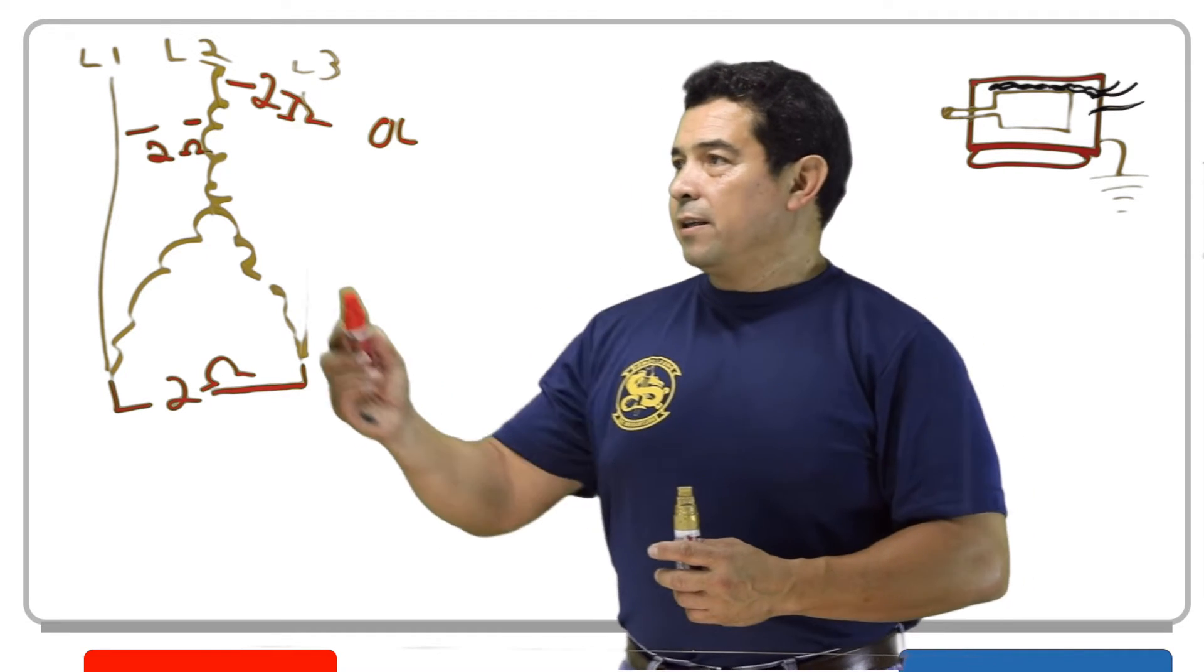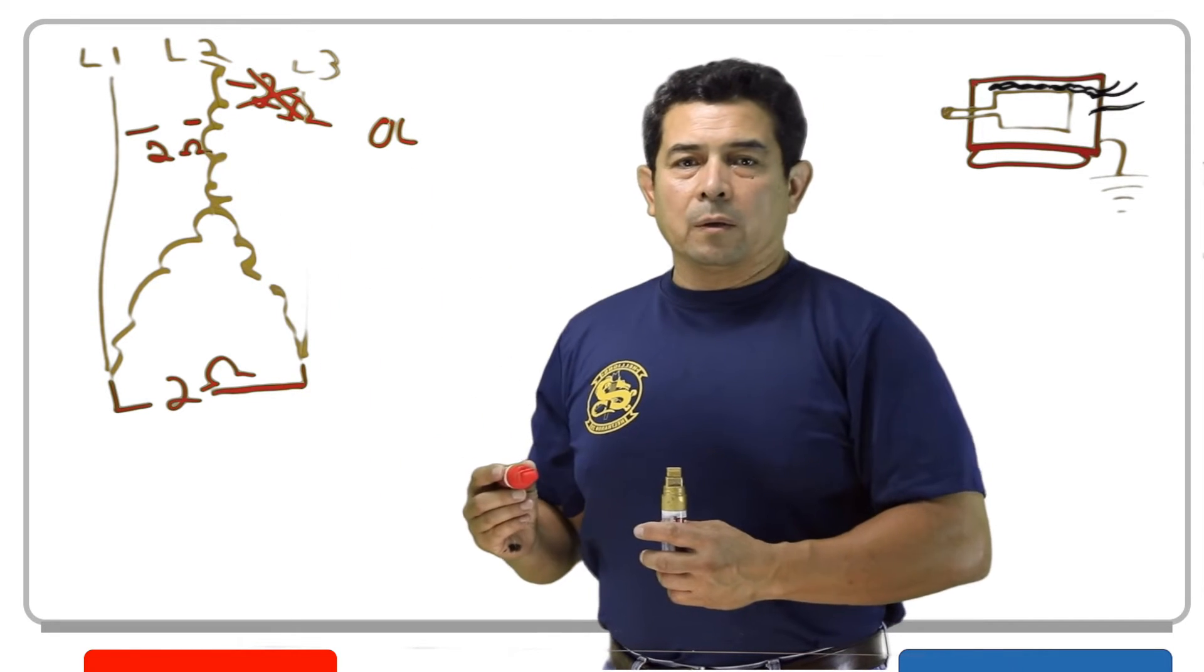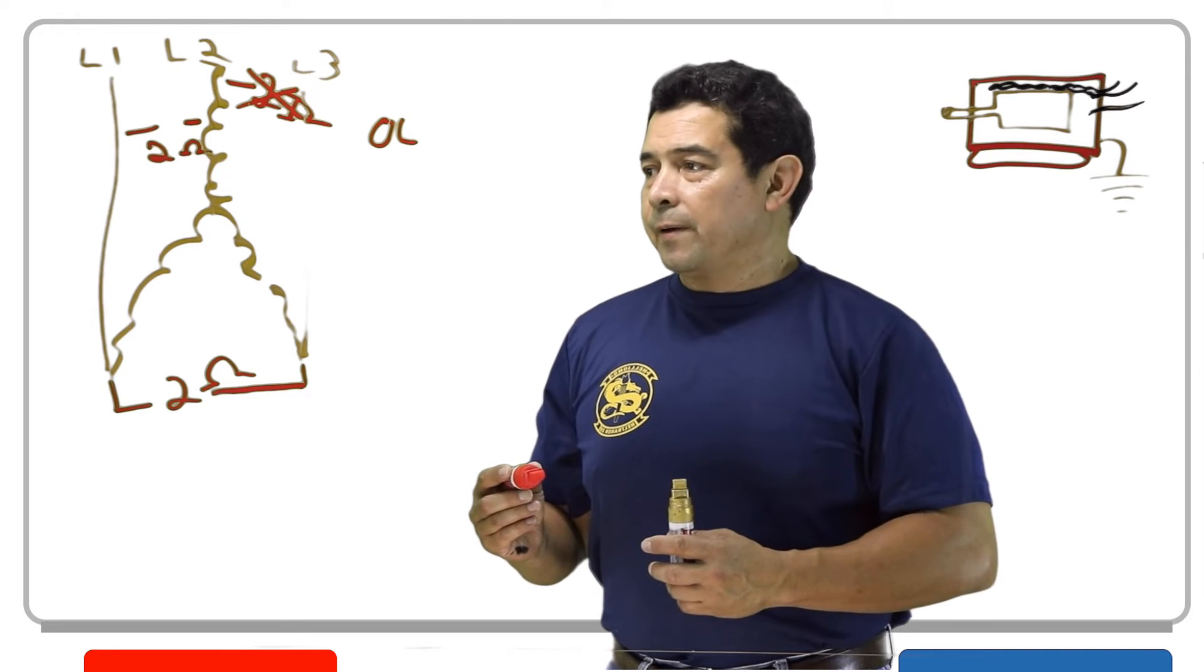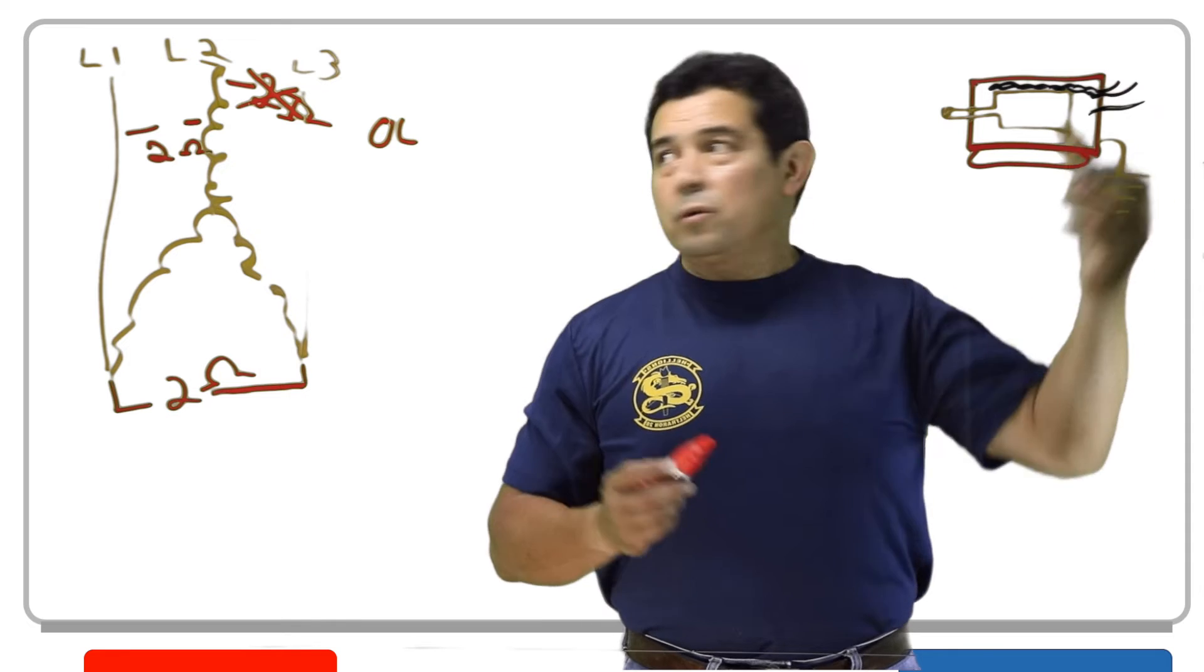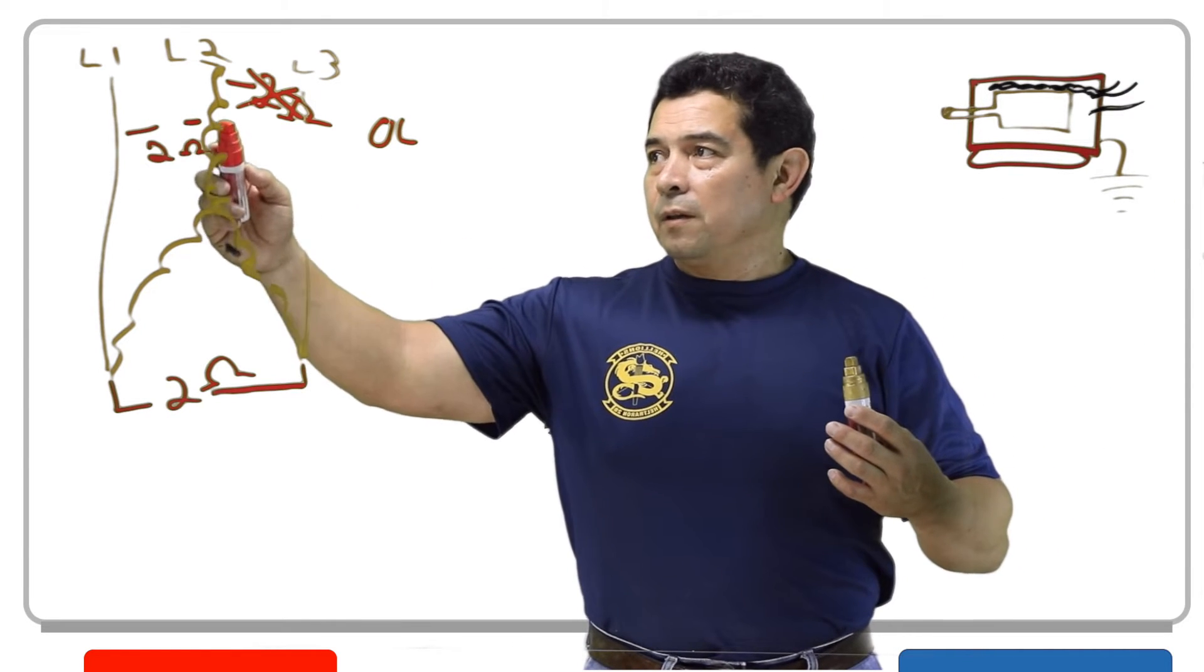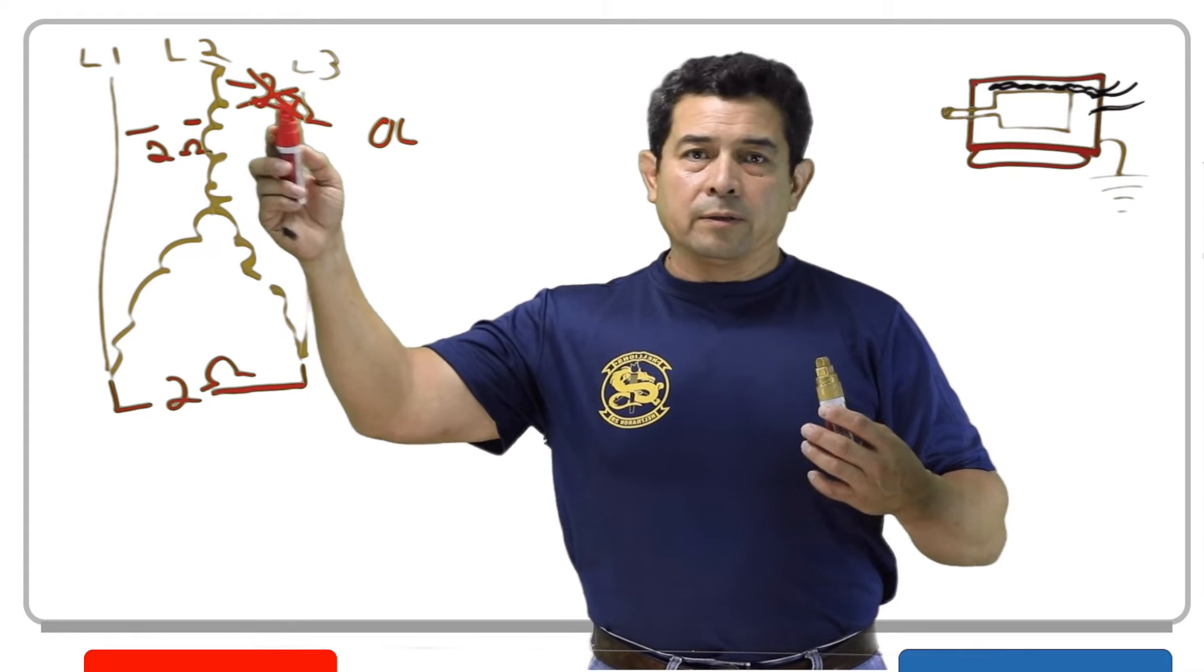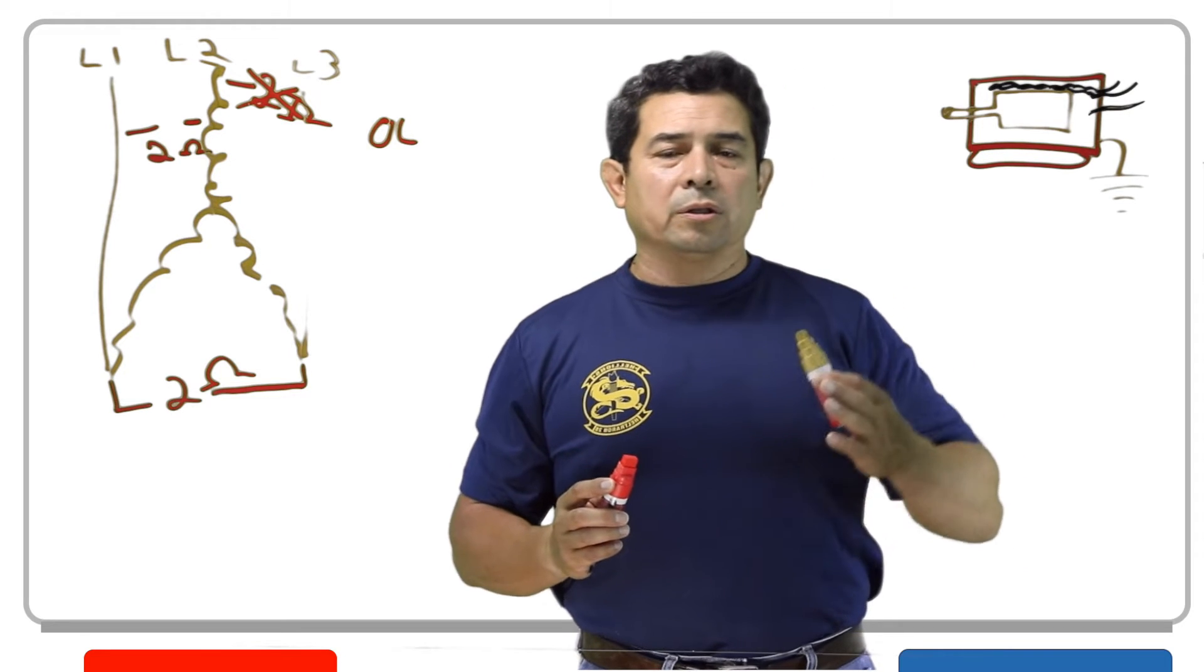But again, like I said, here, you would not get the two ohms. You would get OL on your meter. Now, the other thing is that when you check from this line to this line, you should have a reading. This one to that, you should have a reading. From L3 to L1, you should have a reading, and all the readings should be the same.